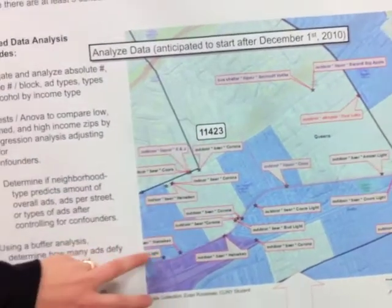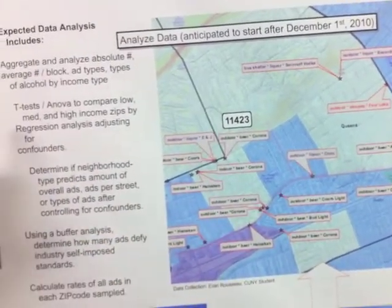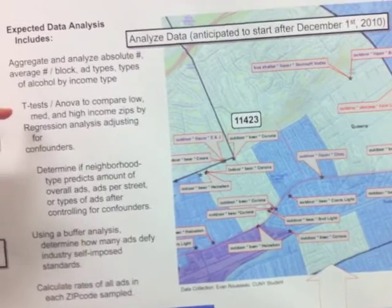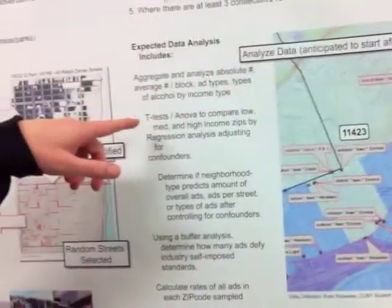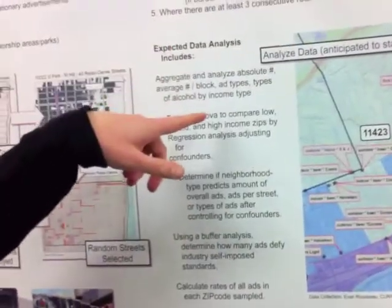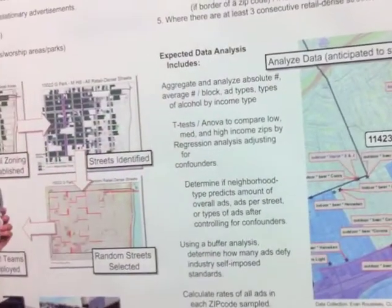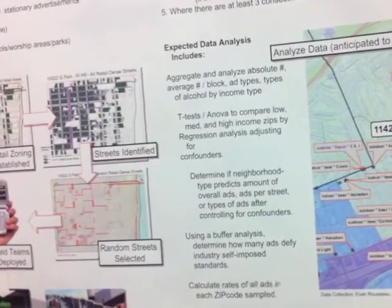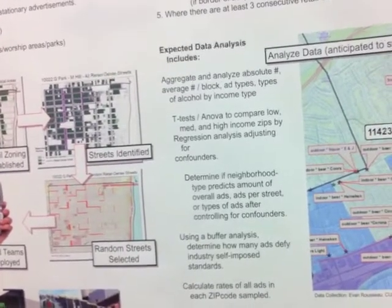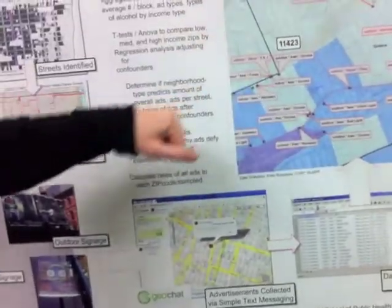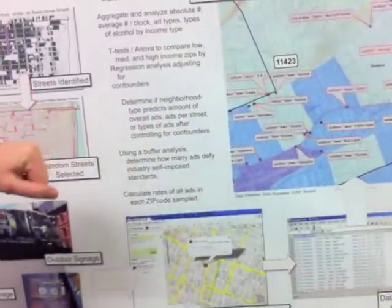In this project, what we're going to be looking for is comparing it to poverty as one thing. And then we want to look at race and ethnicity too, and just see how alcohol advertising varies across New York City by zip code.